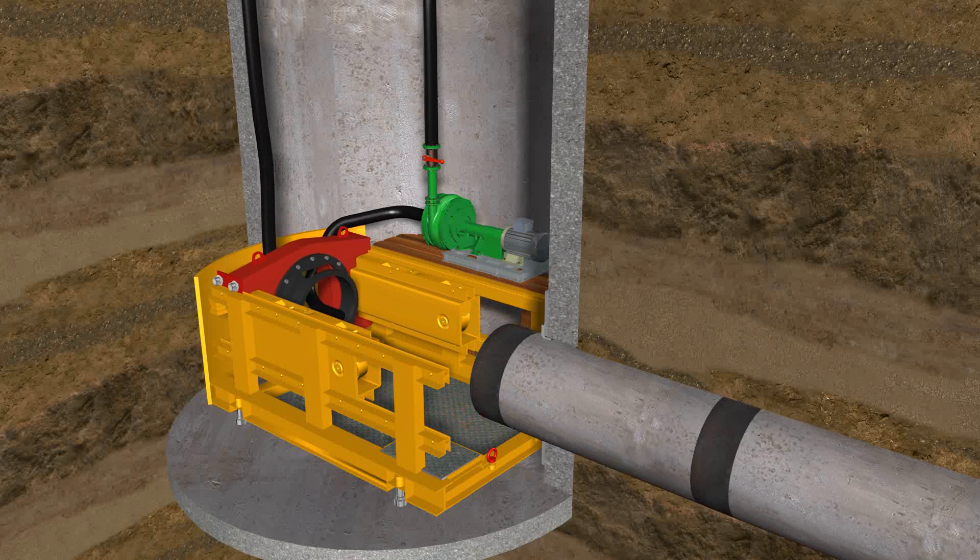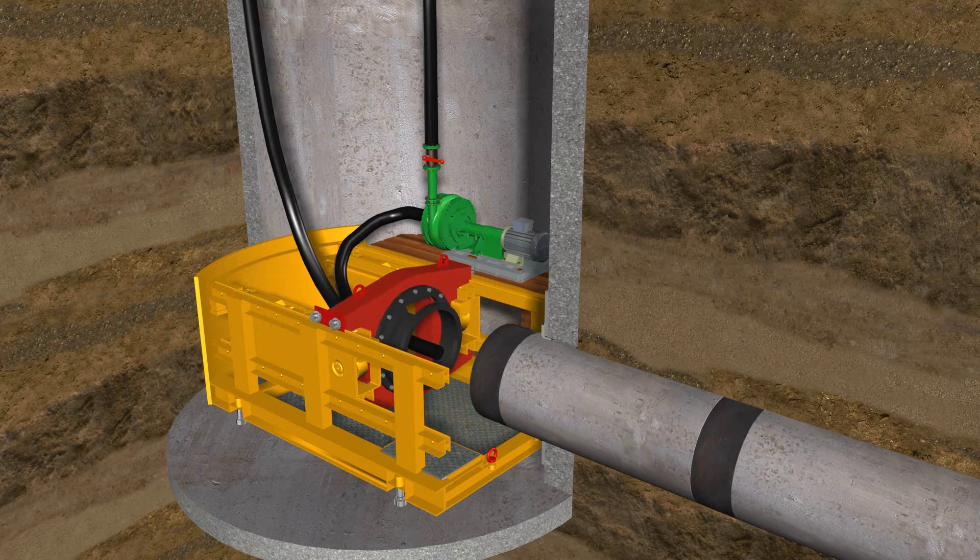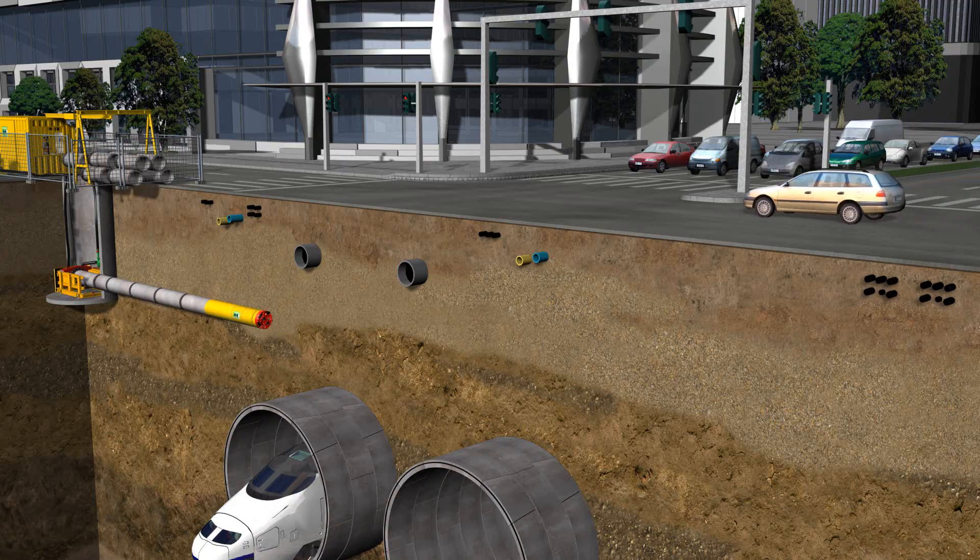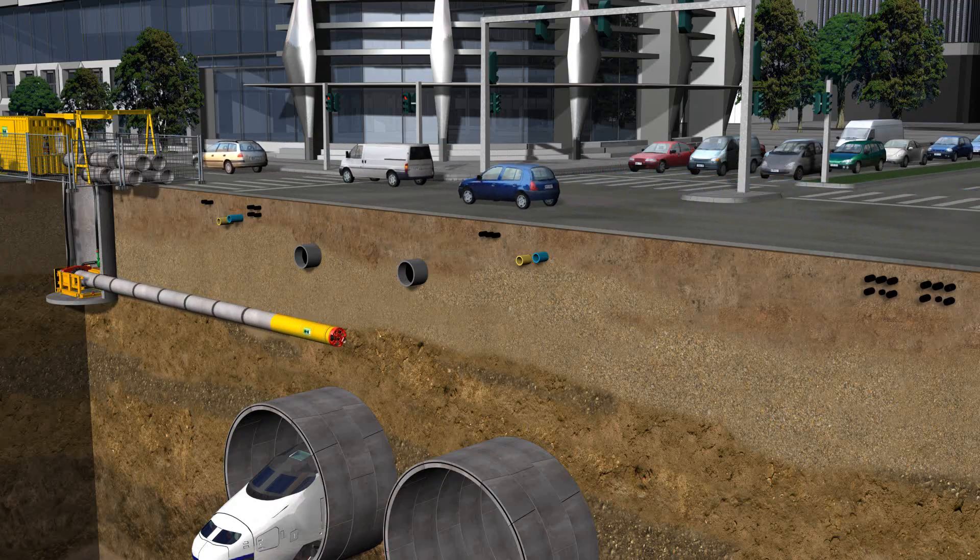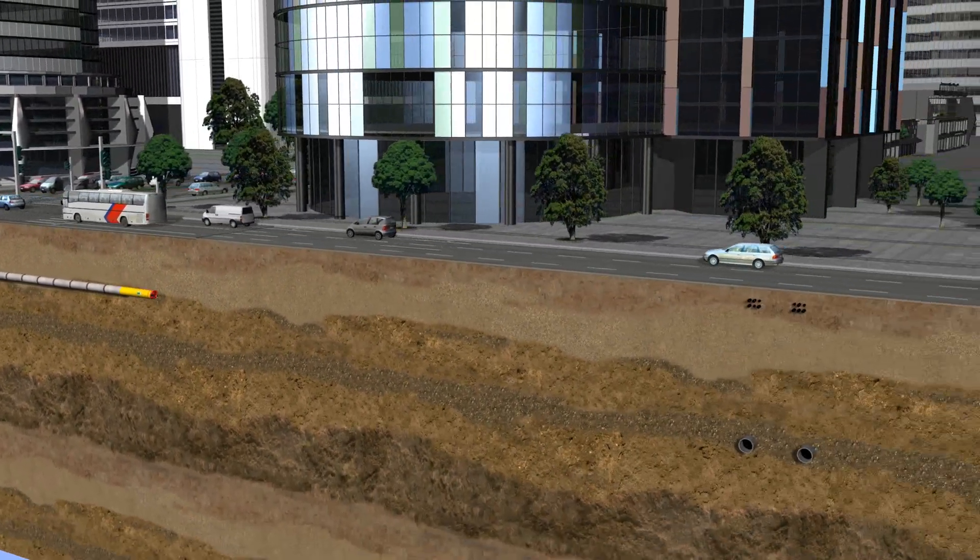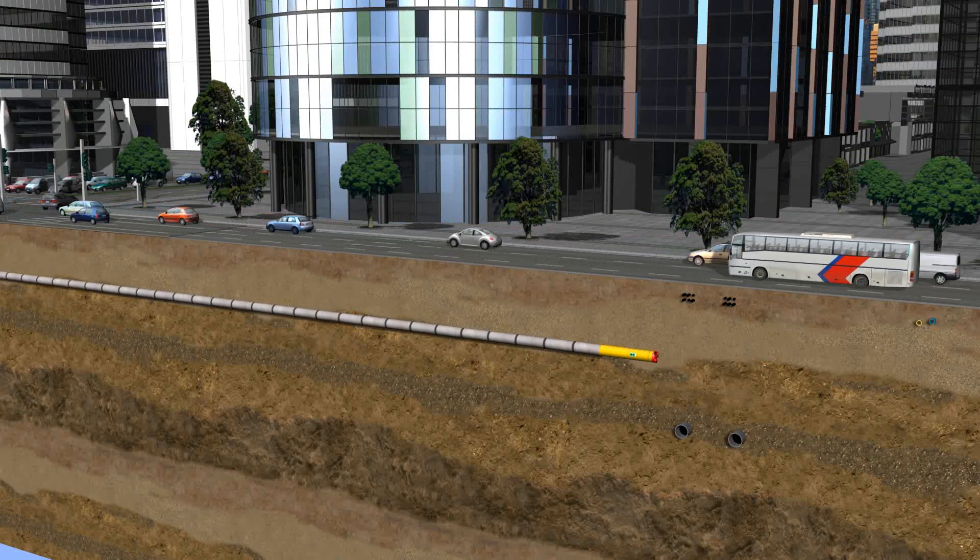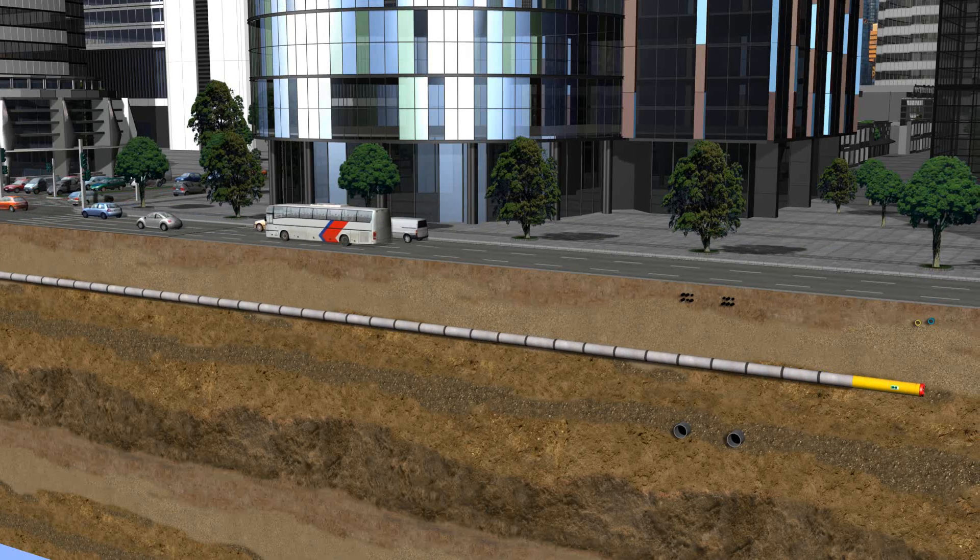This procedure is duplicated again and again until the whole drive length is completed, reaching the reception pit. Crossing pipes in buildings are no problem with this technique as they can be easily overpassed or under crossed. Thus the machine arrives in the reception shaft exactly at the planned coordinates.